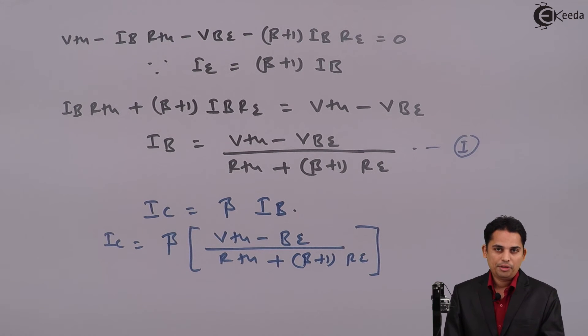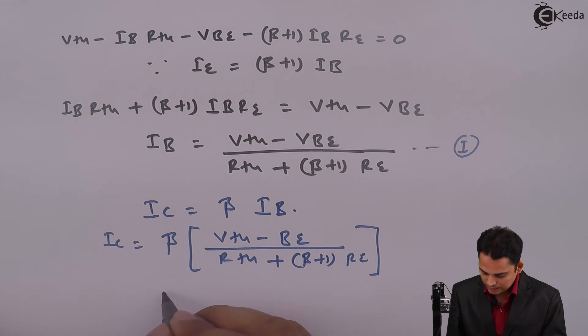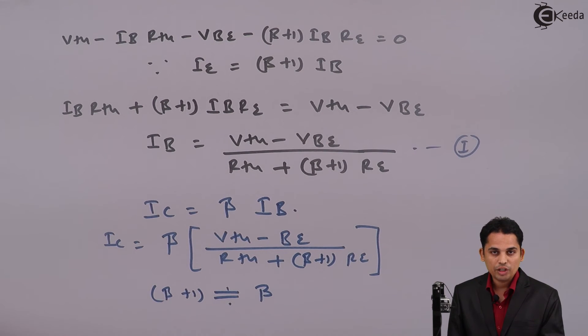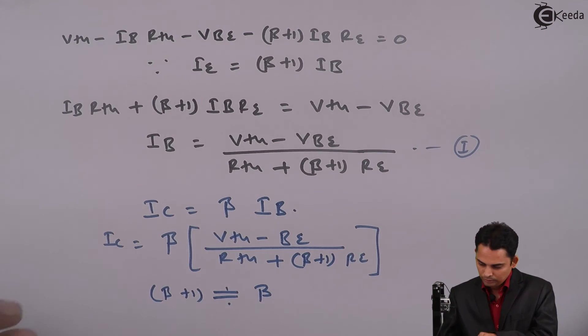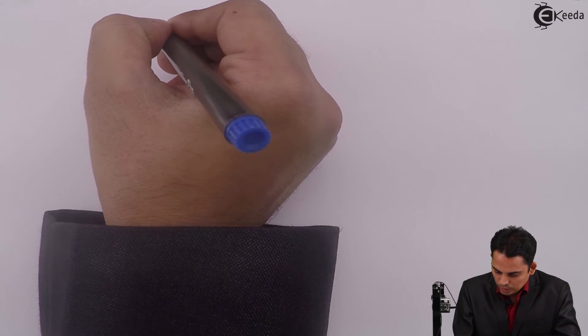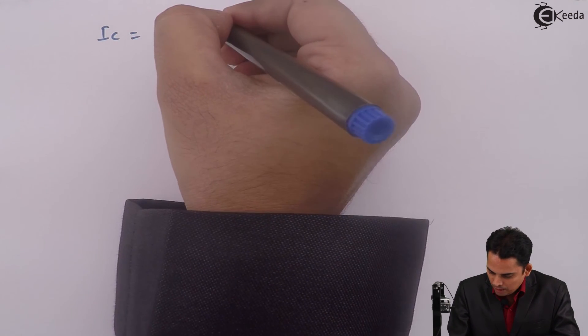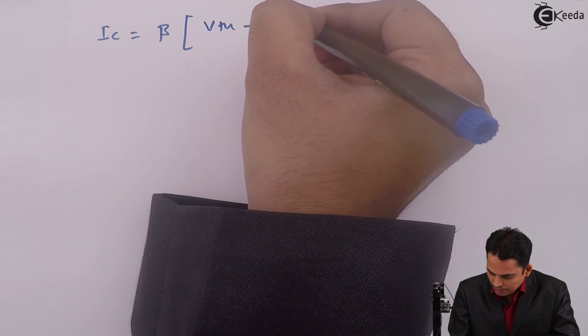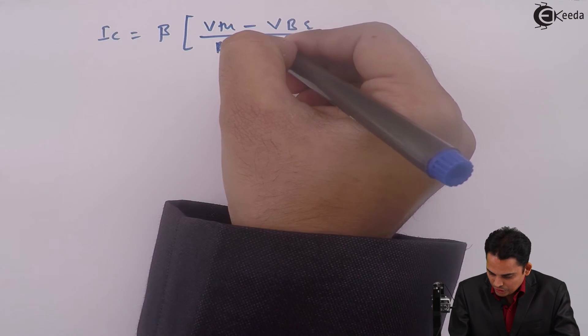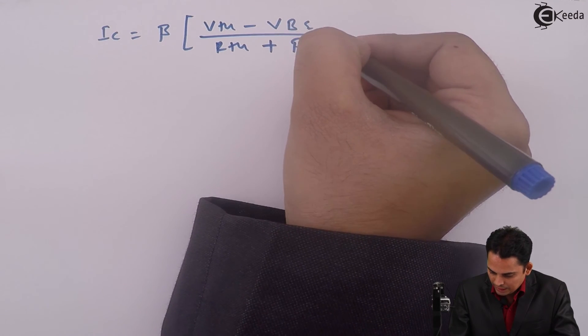Now we will assume certain things. The first assumption is: let beta plus 1 is equal to beta. I will assume that beta plus 1 is approximately equal to beta, and hence the equation will become: IC is equal to beta times (Vth minus Vbe) divided by (Rth plus beta times RE).